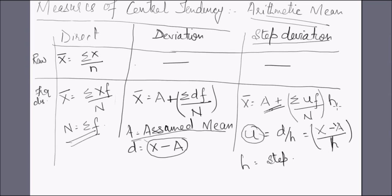So to remember: when obtaining d we subtracted a, so we add it back. In step deviation, to get u we also divided by h, so we must multiply by h in the final formula. The step deviation method can only be used when classes differ by a regular common interval — if that is not the case, we cannot apply this method.